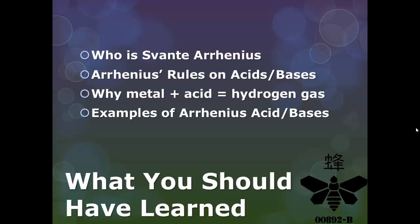Alright guys, so from today's lesson we should have figured out who is this strange man and his strange name, Svante Arrhenius. We also talked about Arrhenius' rules about acids and bases. We kind of explained why metals and acids will make hydrogen gases - that's Table J if you've forgotten. And we've given you guys some examples of Arrhenius acids and bases. Other than that, I hope you guys enjoyed this quick little lesson. Have a great night. Bye.